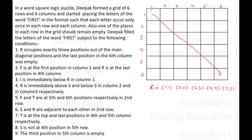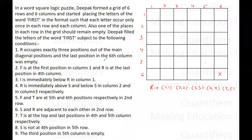Position 1,1 is here, position 2,2 is here, position 3,3 is here, and so on for 4,4 and 5,5. So R occupies exactly three among these positions. The last position in the sixth column — meaning 6,6 — is empty.